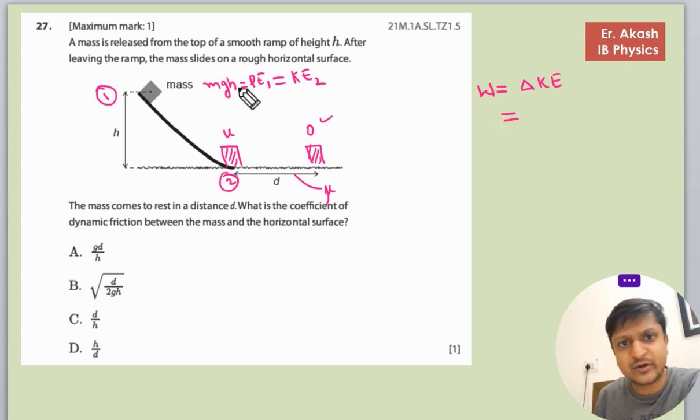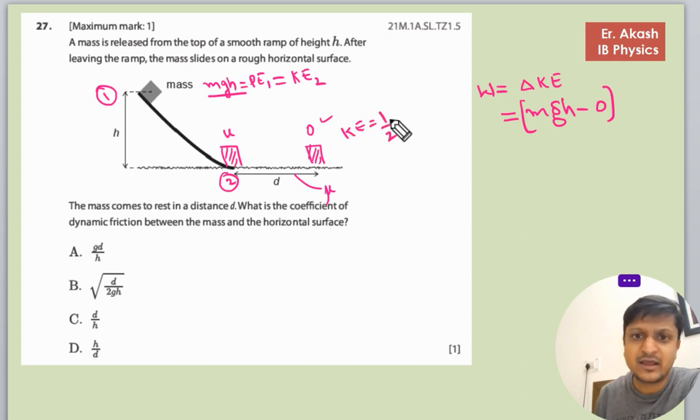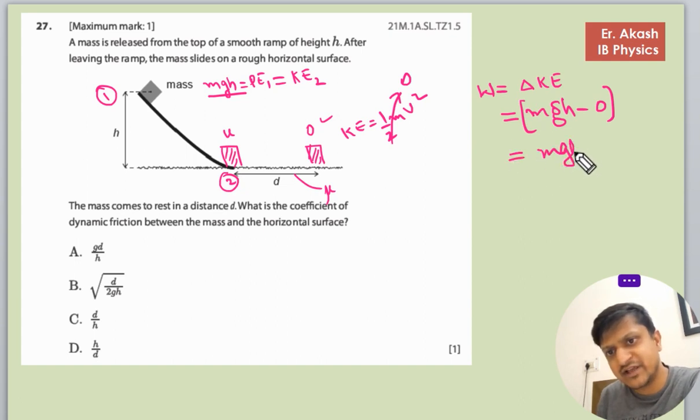The potential energy is mgh at the top and minus 0 because there is no velocity. If the kinetic energy is half m v squared, and the velocity is 0, this whole component becomes 0. So the work done is mgh.